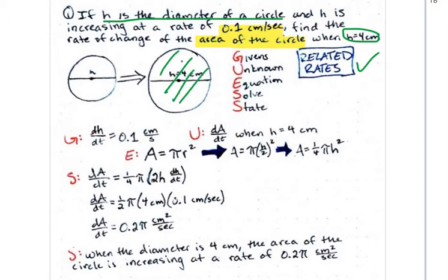We want to know what the area of this circle is right now. Or I guess not the area, but the rate of change of that area.